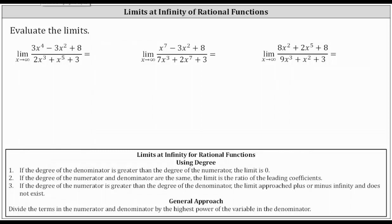For the first limit, the degree of the numerator is four and the degree of the denominator is five. For the second rational function, the degree of the numerator is seven and the degree of the denominator is also seven. And for the third rational function, the degree of the numerator is five and the degree of the denominator is three.